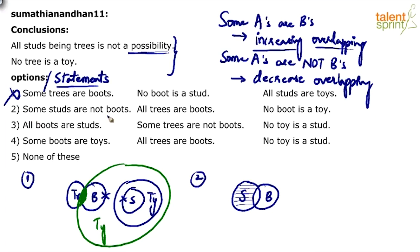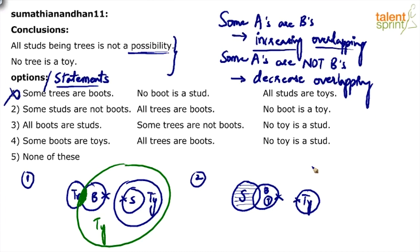The first statement is drawn - some studs are not boots. Then: all trees are boots, which means all trees should come inside B. We put B here and T inside it - all the trees are inside boots. Then it says no boot is a toy, so boots and toys will not overlap. That is the diagram for option two.